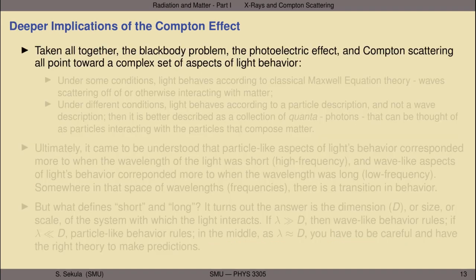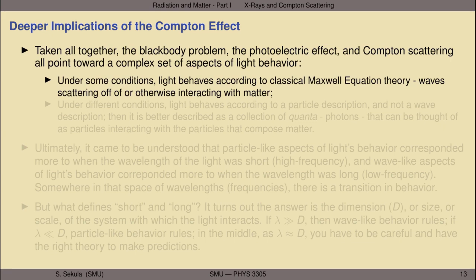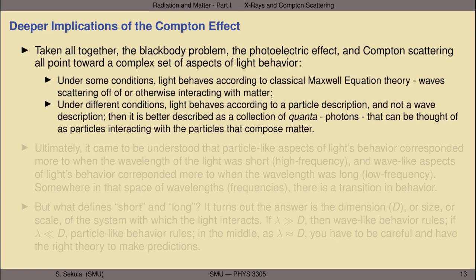Taking everything from the last few lectures together: the blackbody problem, the photoelectric effect, and Compton scattering all point toward a complex set of aspects of light behavior. Light isn't just a wave, and it's not just a discrete particle. Under some conditions, light behaves exactly according to classical Maxwell equation theory — waves interacting with and causing oscillations in matter. But under different conditions, light behaves more accurately according to a particle description: a quantum description where light is discretized, not continuous like a wave.